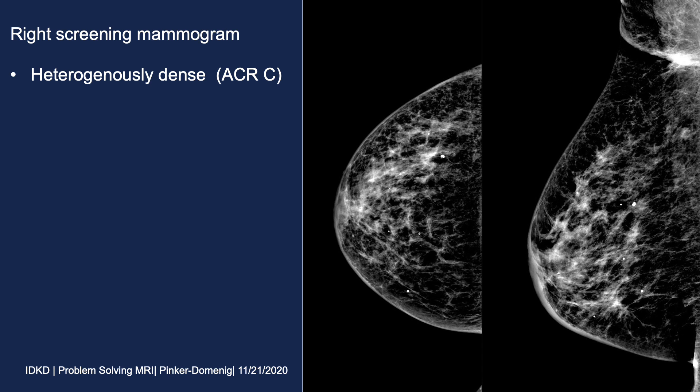This is her right mammogram, which was read as normal — I personally agree with this assessment. We see a few benign calcified cysts, but there are no evident asymmetries, masses, or suspicious calcifications, so this was read as normal.